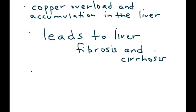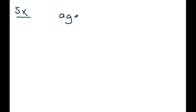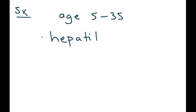This leads to eventual fibrosis and cirrhosis of the liver. Later, this excess copper can go into the bloodstream and then travel to other organs such as the brain and even the eye. Symptoms can start anywhere between ages 5 to 35, and one of the most common is a clinical picture of hepatitis, because the liver is significantly affected by this accumulation of copper.